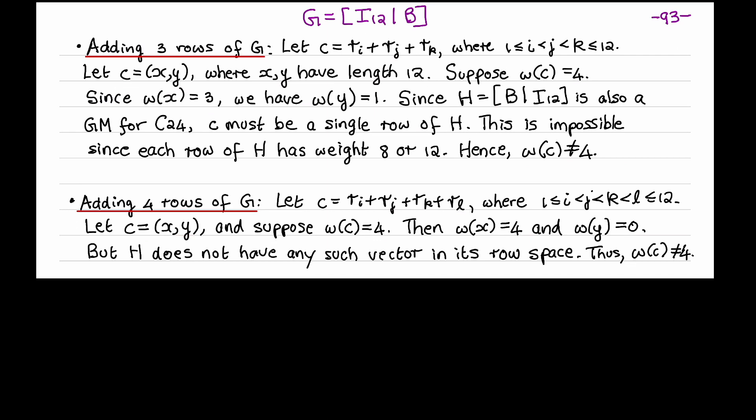Similarly, let's add four rows of G together. We'll call the two halves of the resulting codeword x and y. Suppose that the codeword has weight 4. x must have weight 4, because x was obtained by adding four rows of the identity matrix. This means that y has weight 0. But that's impossible, because H doesn't have any such vector in its row space. And so the weight of C can't be equal to 4.